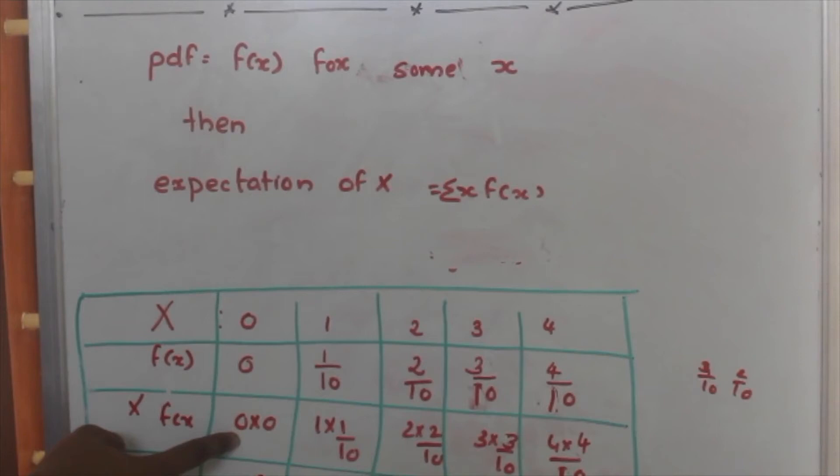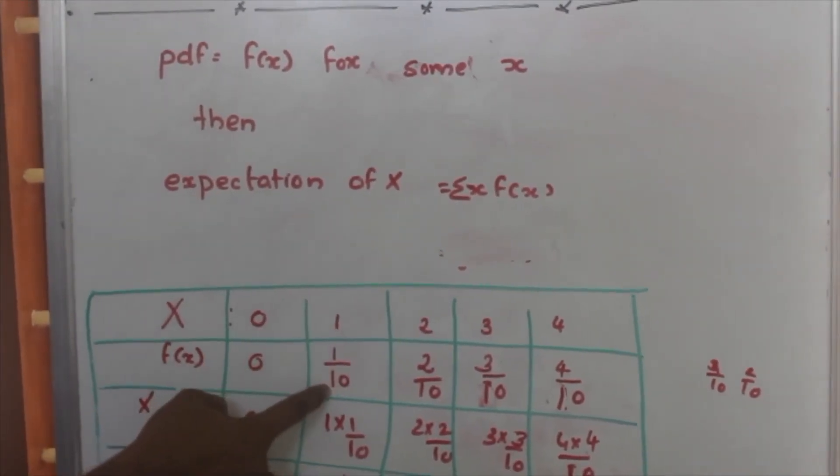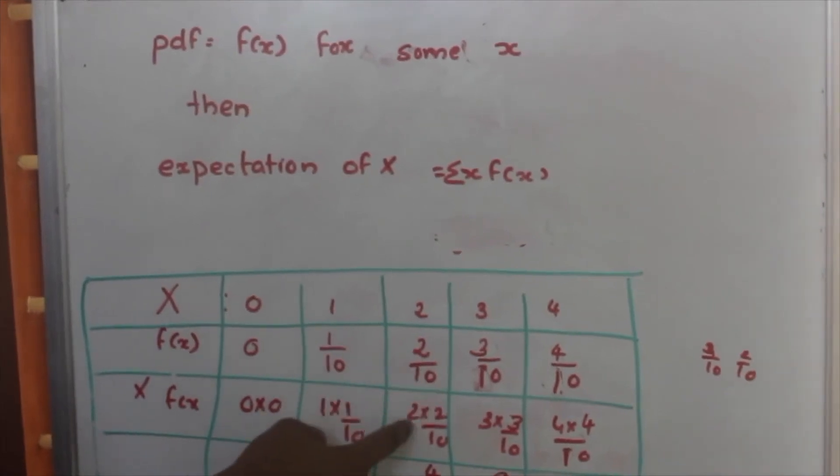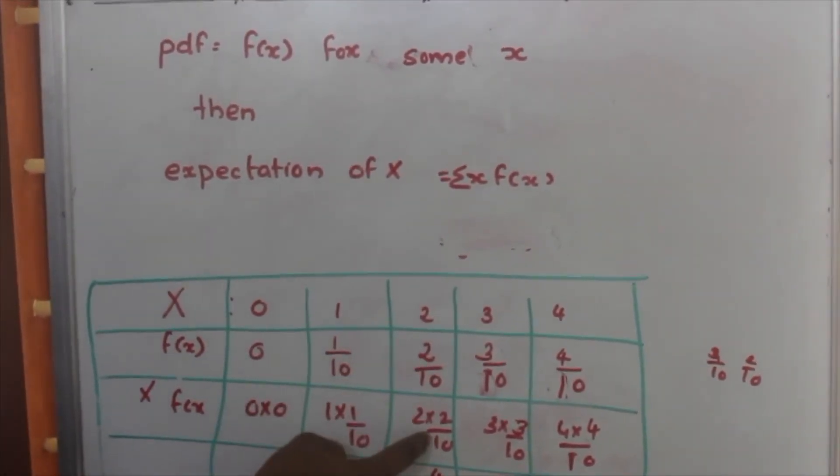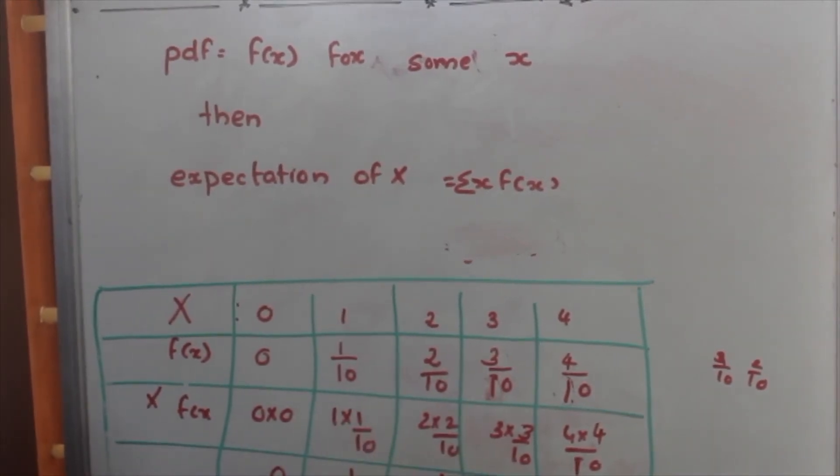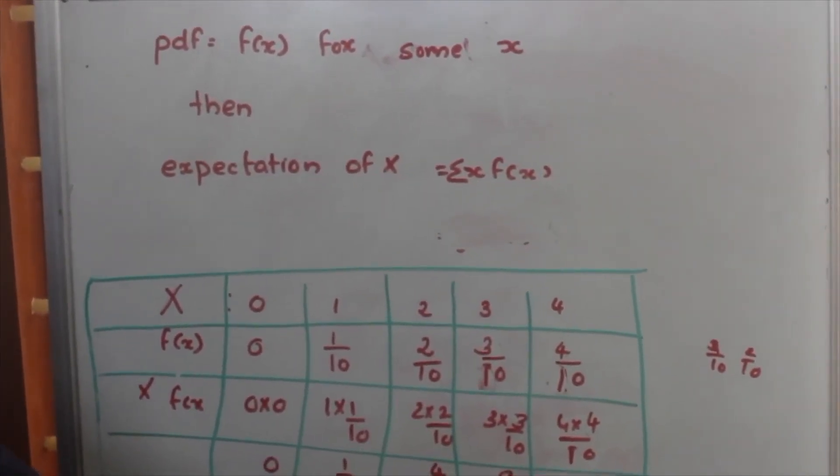Now, what we will do is multiply x with f of x. So, 0 into 0, that is 0. Now, 1 will be multiplied to 1 by 10, so we get 1 by 10. 2 into 2 by 10, that is 4 by 10. 3 into 3 by 10, that is 9 by 10. 4 into 4 by 10, 16 by 10.